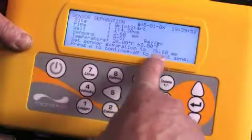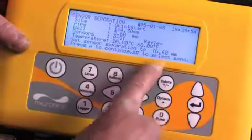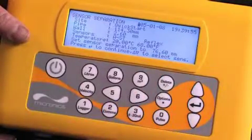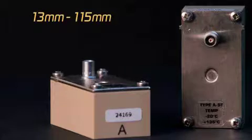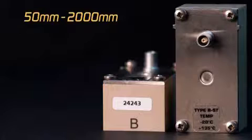In this case, seventy-six millimeters, ensuring that the right type of sensor is selected. For the standard sensors, the pipe sizes are 13 to 115 millimeters. Depending on the information entered, you may need to use other sensors if available for other pipe ranges. B standard sensors are for a pipe range of 50 to 2,000 millimeters.